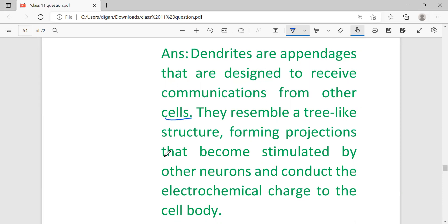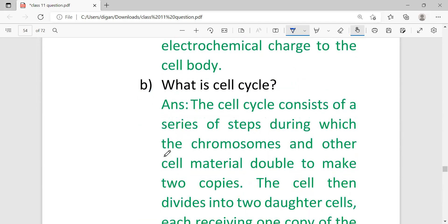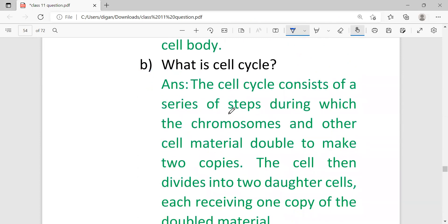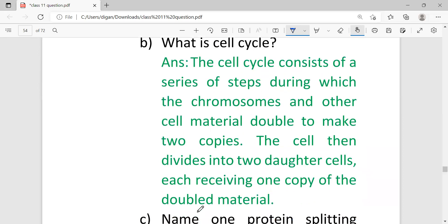What is cell cycle? The cell cycle consists of a series of steps during which chromosomes and other cell materials double to make two copies. The cell then divides into two daughter cells, each receiving one copy of the doubled material. It's the time period during which one cell divides into two daughter cells.